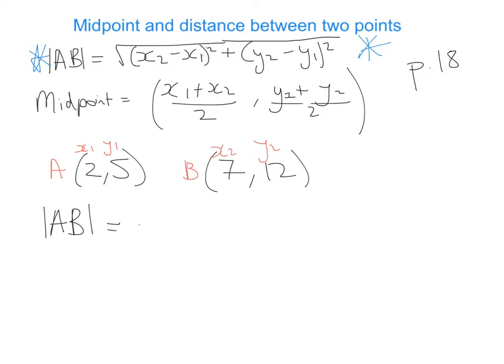So we're going to fill in our formula now and I've already labeled my points A and B. So x2 equals 7 minus x1 which is 2, all to be squared, plus y2 which is 12 minus y1 which is 5, all to be squared. That equals the square root of 5² plus 7².